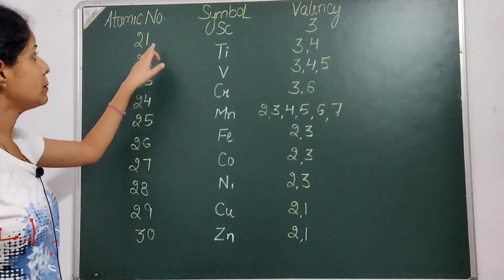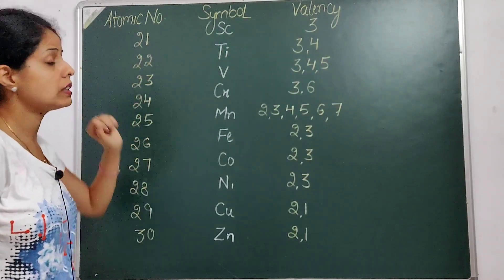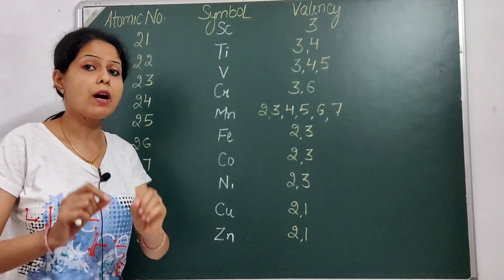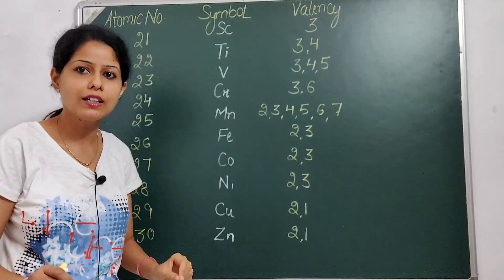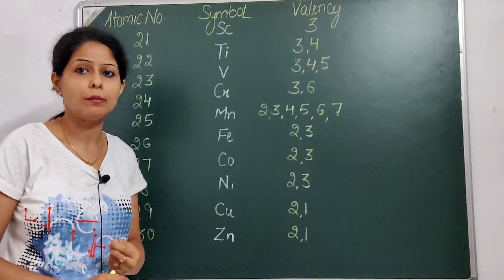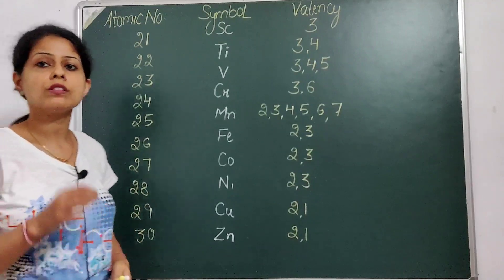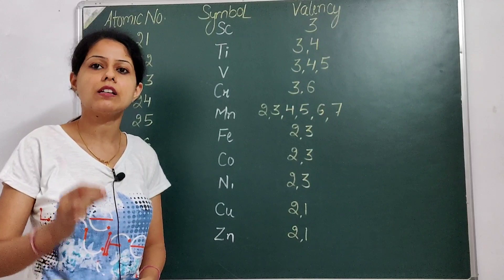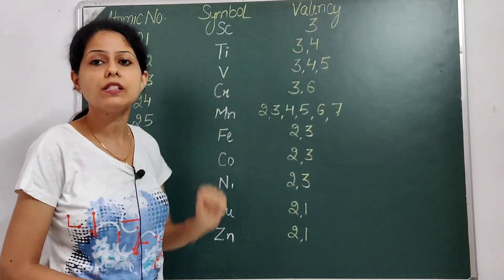Let's start with the first element of the series, which is Scandium, having atomic number 21. I will tell you the trick with logic, because as I always say, no trick works without logic. So here we will learn the trick logically so that it becomes easy to remember. Scandium has atomic number 21, and its valency you need to remember — it is 3.